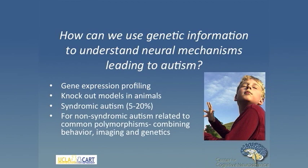The general question is: how can we use genetic information to understand the neural mechanisms which lead to autism, and in particular to the complex behaviors we see? There are lots of ways to look at genes — gene expression profiling, knockout models in animals, syndromic autisms like Fragile X. For the vast majority of non-syndromic individuals with autism, you have to go into the realm of common polymorphisms. We've been using this approach to combine behavior, imaging, and genetics using common polymorphisms.